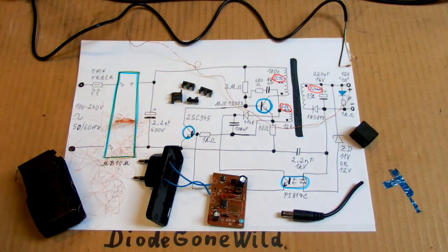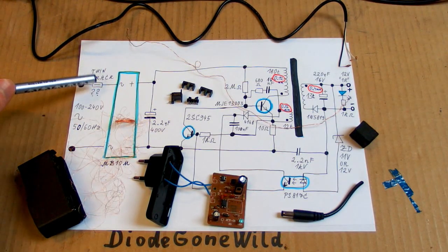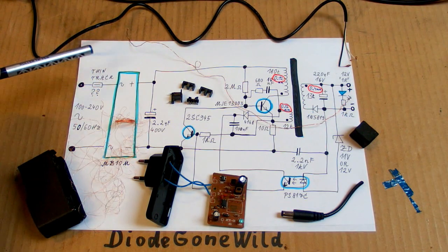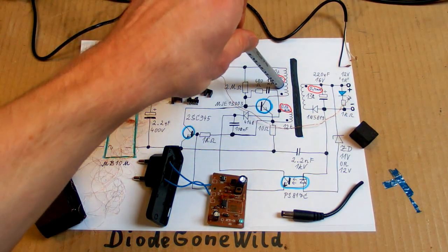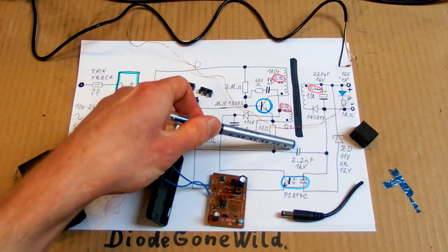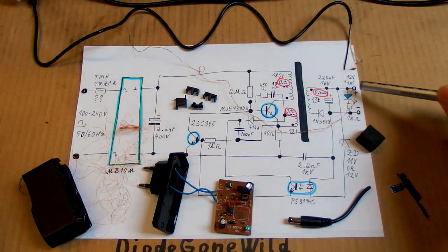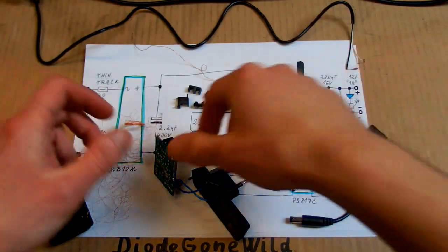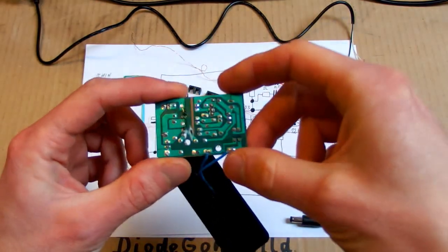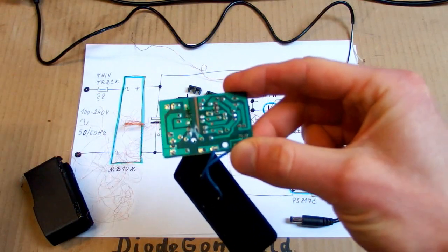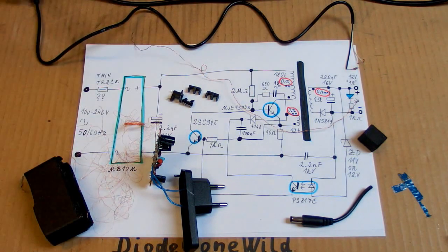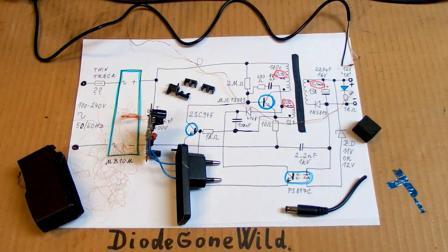So to sum it up, it's another dodgy Chinese adapter with no proper fuse, no fusible resistor or inrush resistor, no interference filter, no snubber network, very dodgy interference capacitor here. The actual current capability is just half of what it claims. And the isolation on the board is, well, I have seen much better ones, but I have also seen much worse. And the same applies to the transformer. So this is Diode Gone Wild and see you in my next videos.